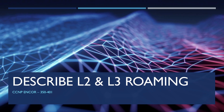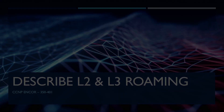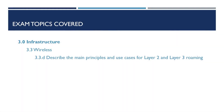In today's video we're going to take a look at the different types of roaming that can take place within our network, as well as taking a look at the purposes of Layer 2 and Layer 3 roaming. We'll also take a look at some examples of where these can be useful and beneficial within our network designs. This video forms part of the CCMP Enterprise Core Exam Series 350-401, and the exam topic covered is 3.3D, which is to describe the main principles and use cases for Layer 2 and Layer 3 roaming.